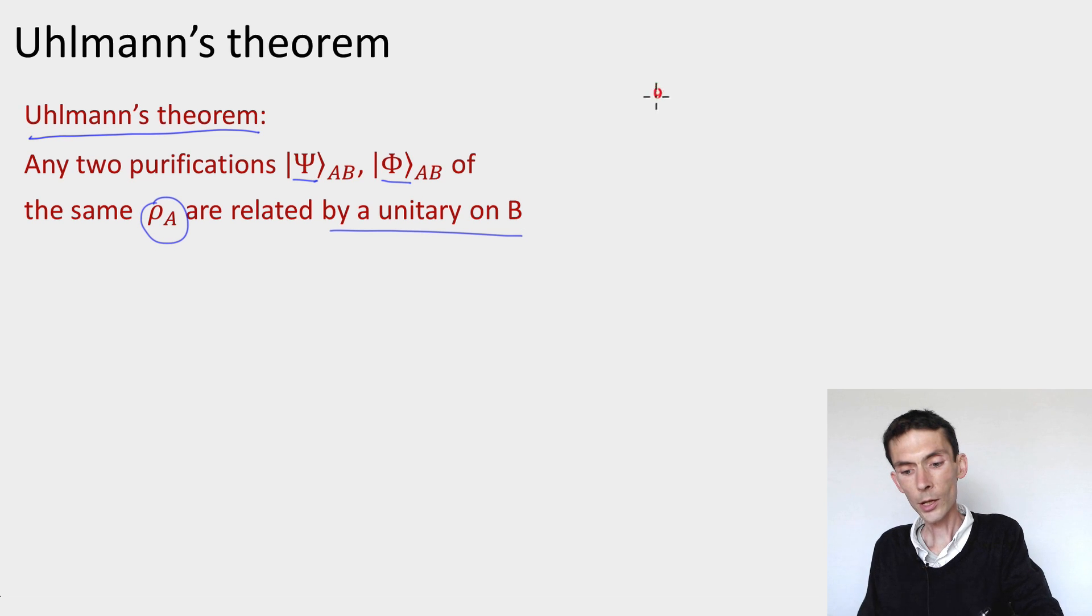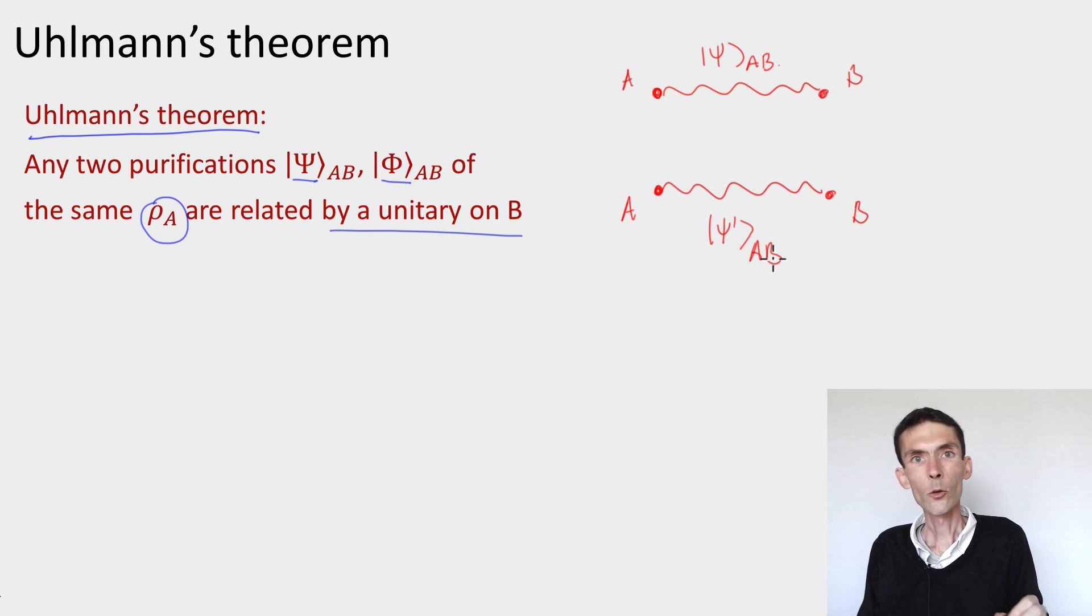Suppose that we have these two states and I can draw them like this. I have a system A, I have a system B, and a state ψ_AB that maybe is entangled between A and B. And now I have a copy of system A, copy of system B, and another state ψ'_AB. And the question is: